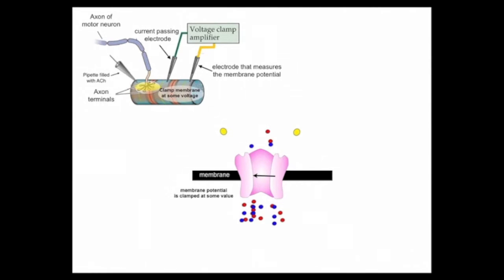A moment later, the acetylcholine diffuses off of the receptor and the channel closes. The question we ask next is: what are the relative sodium and potassium currents that flow to generate the endplate potential, and how does that relate to the reversal potential? What exactly is the reversal potential?